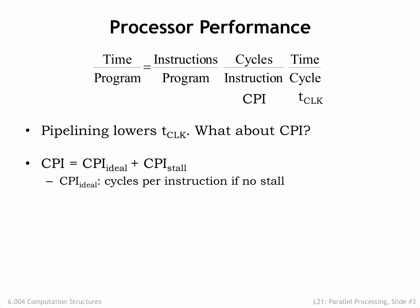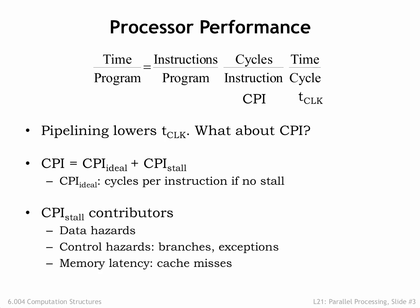In our five-stage pipeline implementation of the beta, we designed the hardware to complete the execution of one instruction every clock cycle, so CPI ideal is one. But sometimes the hardware has to introduce NOOP bubbles into the pipeline to delay execution of a pipeline stage if the required operation couldn't yet be completed. This happens on taken-branch instructions, when attempting to immediately use a value loaded from memory by the load instruction, and when waiting for a cache miss to be satisfied from main memory. CPI stall accounts for the cycles lost to the NOOPs introduced into the pipeline, and its value depends on the frequency of taken branches and immediate use of load results, typically at some fraction of a cycle.